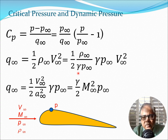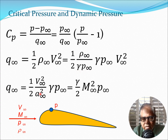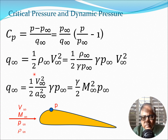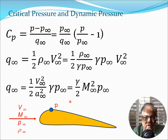Recalling that γP_∞/ρ_∞ = a_∞², the dynamic pressure Q_∞ simplifies to (γ/2) M_∞² P_∞. So we have written the dynamic pressure in terms of Mach number by using the fact that the speed of sound squared equals γP_∞/ρ_∞. If this is unfamiliar, earlier lectures introducing Mach number and speed of sound cover this derivation.